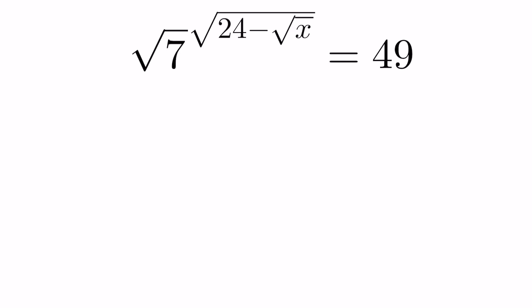All right, in today's example, we're going to take a look at an exponential problem. What they give you is the square root of 7 raised to the power of the square root of 24 minus root x equals 49.